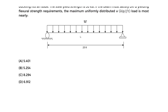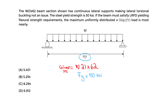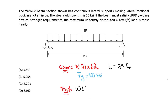Let's begin with what we are given. We have the W21×62, and the yield strength FY is 50 KSI — always 50 KSI for steel. We are given the length, which I'll denote as L = 25 feet. And what we want to find is omega, the distributed load, with units of kip per foot.